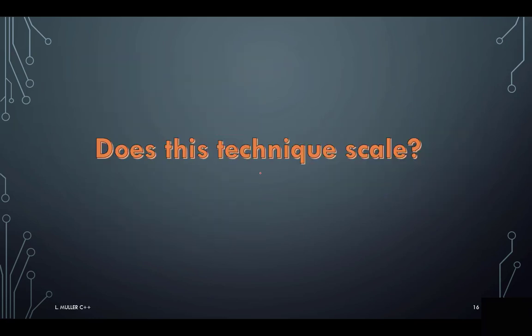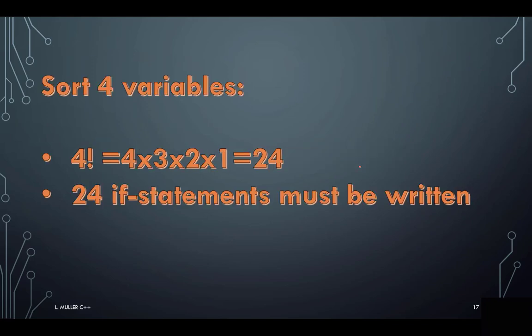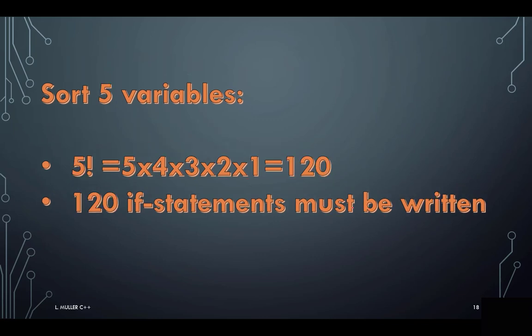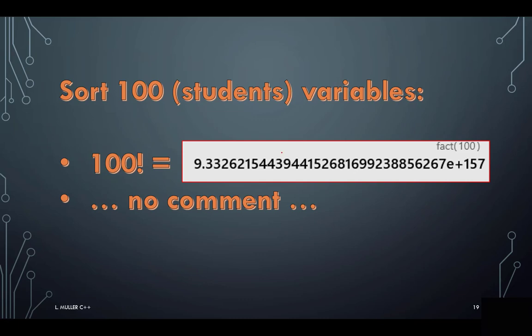Next, does this technique scale? This looks great for three variables. What happens when I have four? In four variables, I use the math that I think is correct, and I say, well, four variables is four for the first one, three for the second, two, and then one, 24 if statements must be written. If I had five variables, it grows to 120. I can only say ouch.